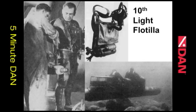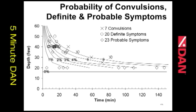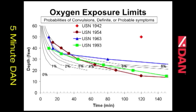They were all using this closed-circuit pendulum rebreather. In the following slides we look at the model of the probabilities of convulsions — definite or probable symptoms — since it's a little bit more sensitive. We see here the U.S. Navy oxygen exposure limits: the 1942 limit, which is way off the map; the 1954 limit, which has come down a bit; and the 1963 limit, which actually went up a little longer.